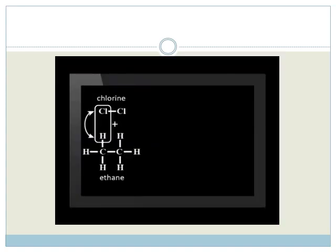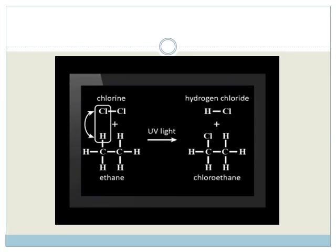The chlorine atom swaps places with the hydrogen atom in ethane. The products of this reaction are chloroethane and hydrogen chloride.